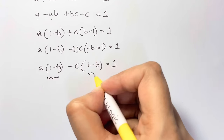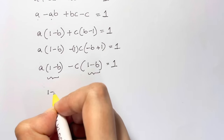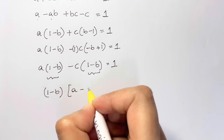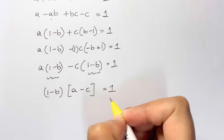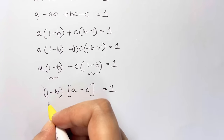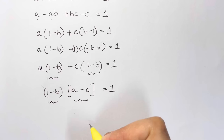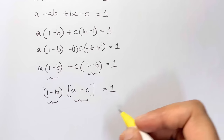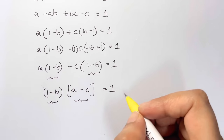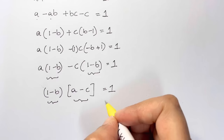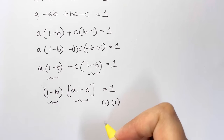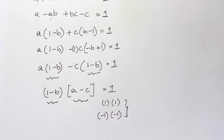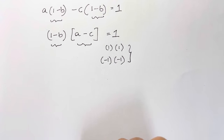So I can write it as a·(1 minus b) minus c·(1 minus b) equals 1. These terms are the same, so I can take (1 minus b) out as common, giving (1 minus b)·(a minus c) = 1. Now, 1 is a product of 1 times 1, and also negative 1 times negative 1, so we have two solution cases.